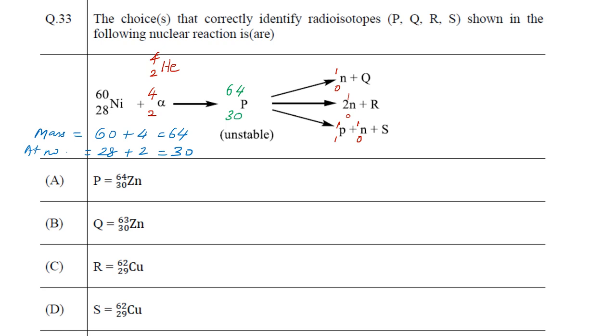We see P must be 64 and 30, that is the mass of P must be 64 and the atomic number must be 30. When we see the options given here, option A is absolutely correct because P is 64 and 30 which is attributed to zinc.